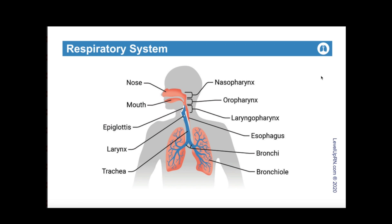Let's kick things off by talking about the key function and components of the respiratory system. The key function of the respiratory system is gas exchange — it will provide oxygen to the body cells and remove carbon dioxide from the body. In terms of the components of the respiratory system, we have these upper airway components, which include the nose, mouth, pharynx, larynx, and trachea.